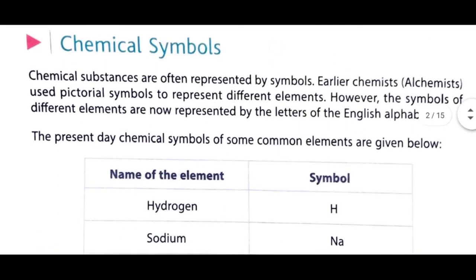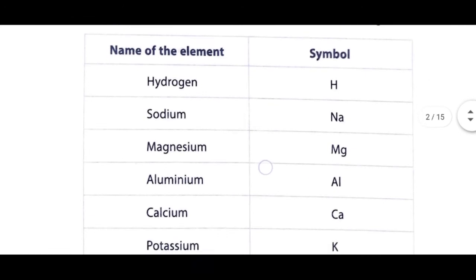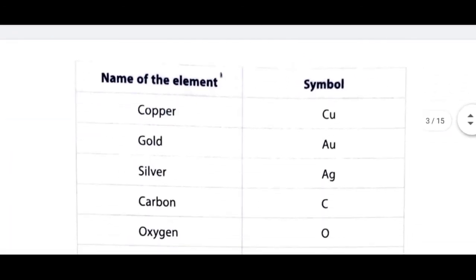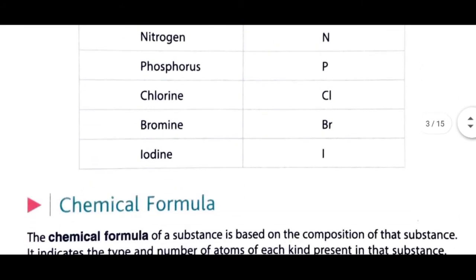Now let us study about chemical symbols. Chemical substances are often represented by symbols. Chemical substances ko symbols ke dwara represent kiya jata hai. Earlier, alchemists used pictorial symbols to represent different elements. However, the symbols of different elements are now represented by letters of the English alphabet. For example: hydrogen is H, sodium is Na, magnesium is Mg, and aluminium is Al.